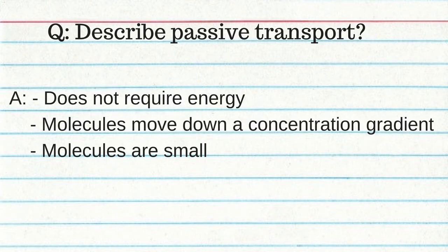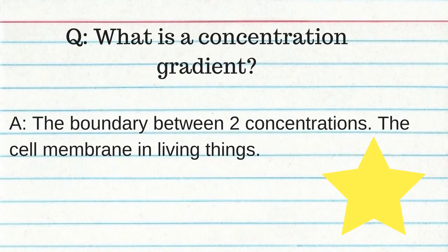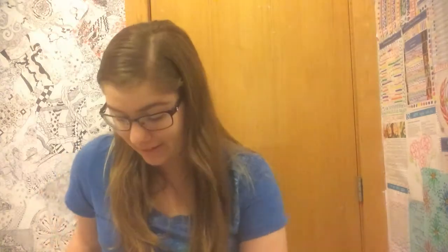Passive transport does not require energy and molecules move down a concentration gradient; the molecules are usually small. A concentration gradient is the boundary between two concentrations — usually the cell membrane in living things. Diffusion is the movement of molecules from an area of high concentration to an area of low concentration, going with the concentration gradient.